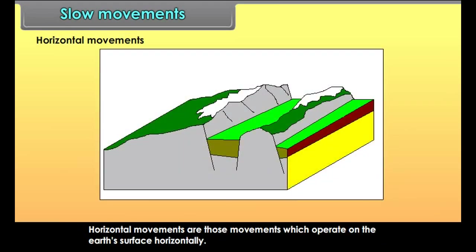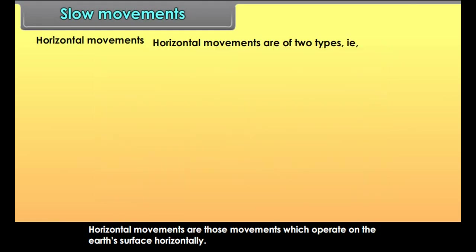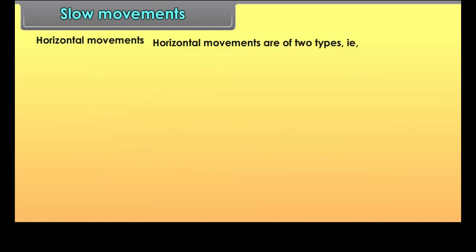Horizontal movements are those movements which operate on the earth's surface horizontally. Horizontal movements are of two types: forces of compression and forces of tension.